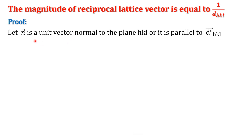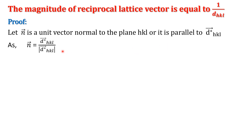If n̂ is the unit vector normal to the plane hkl, it is parallel to d* hkl. We represent the normal to plane p q r by unit vector n̂, which is parallel to d* hkl. We define: n̂ = d* hkl / |d* hkl|. Substituting d* hkl = h·a* + k·b* + l·c*, divided by magnitude |d* hkl|, this gives the unit vector normal to the plane hkl.